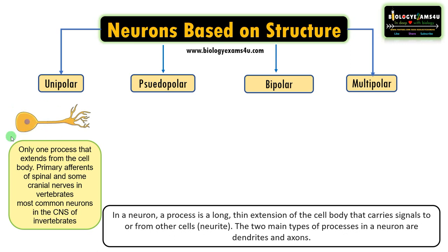The process in a unipolar neuron is often an axon, but branches of the axon sometimes function as dendrites. The peripheral process is associated with sensory reception, and the central process is associated with transferring signals to the central nervous system. Unipolar neurons are found in the peripheral nervous system and are responsible for transferring sensory information from the skin, muscles, and other organs to the CNS. They are the most common neurons in the CNS of invertebrates.